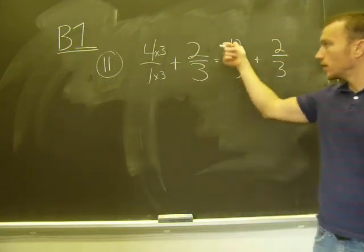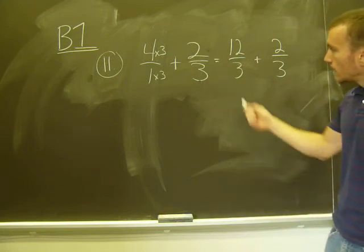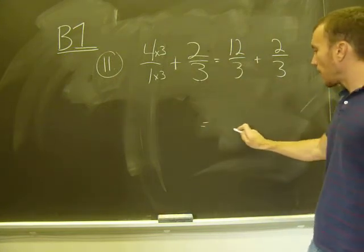And there we go. Four over one is the same thing as twelve over three. And now that I have it over the common denominator, I'm able to add them together.